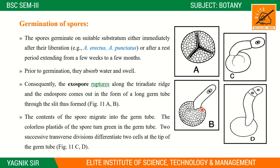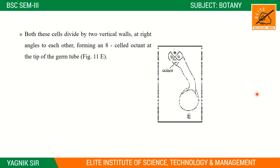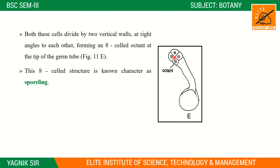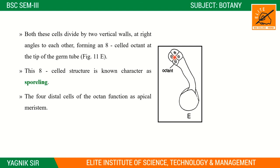After two transverse divisions a basal cell and apical cells are formed. Then two vertical walls at right angles to each other form the head cell, resulting in four cells. Further division produces eight cells — this eight-cell structure is known as the octant.